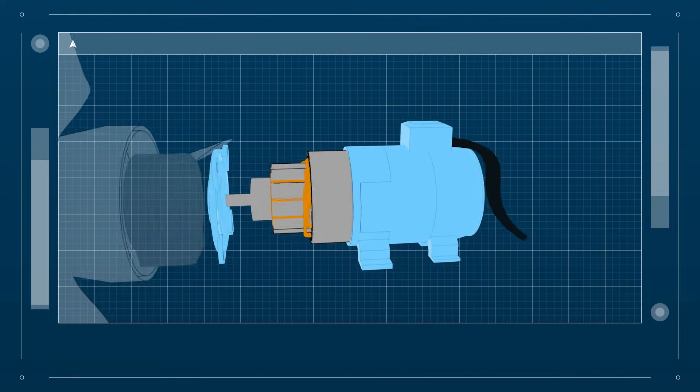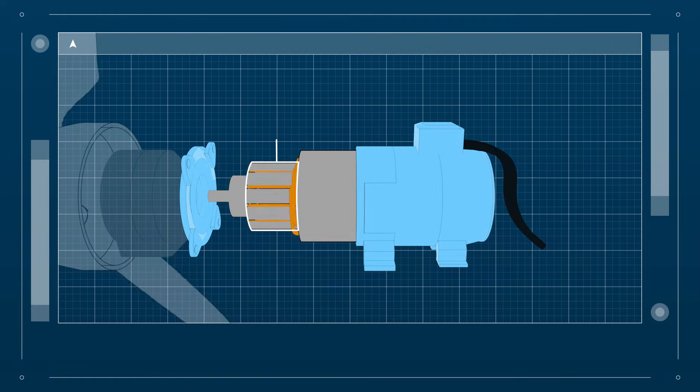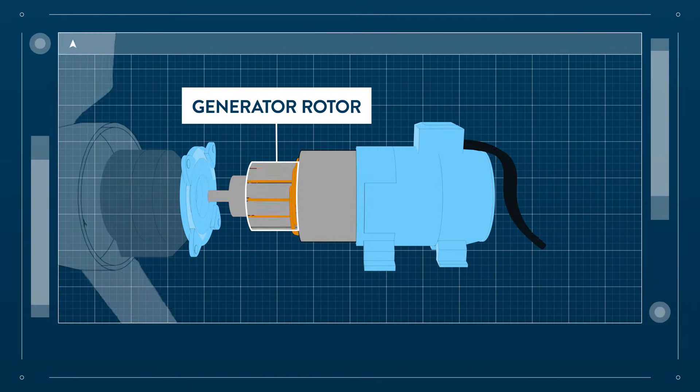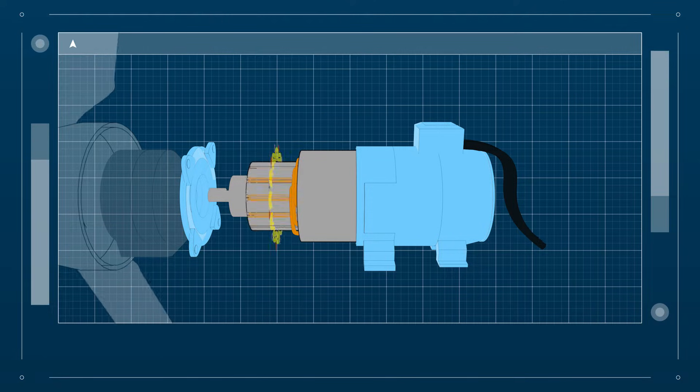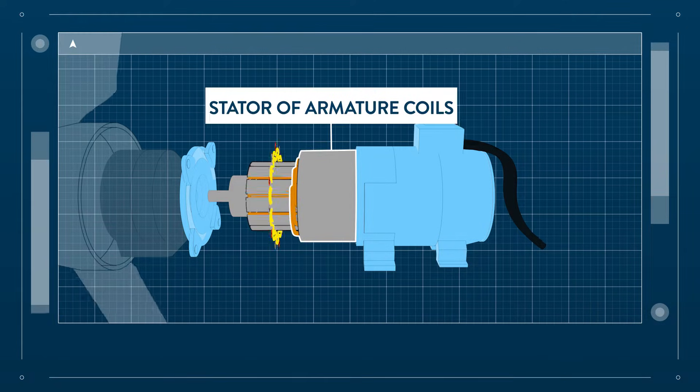The mechanical force of the blades drives the rotor of the generator. This creates a rotating magnetic flux inside the stator of armature coils.